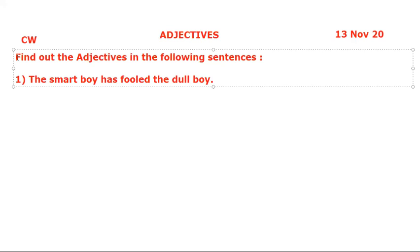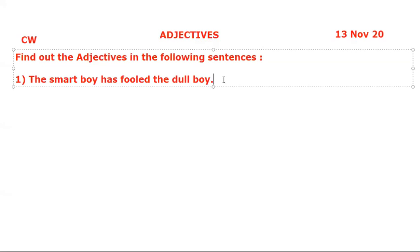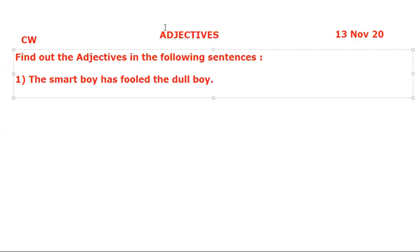This will be the heading — the bluish one: 'Find out the adjective in the following sentences.' Now I am making you write the first sentence: 'The smart boy has fooled the dull boy.' Underline the adjectives — underline 'smart' and 'dull'.